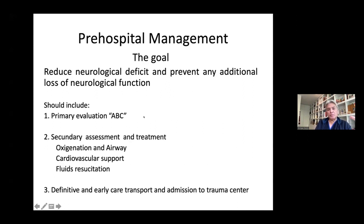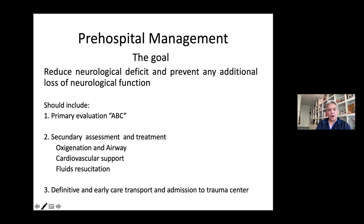In pre-hospital management, the goal is to reduce neurological deficit and prevent any additional loss of neurological function. This should include primary evaluation of the airway, breathing, and circulation (ABC), secondary assessment and treatment with oxygenation and airway management, cardiovascular support, fluid resuscitation, and definitive early care transport and admission to a trauma center.